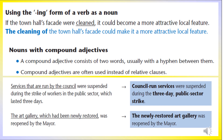Using the -ing form of a verb as a noun. Look at the first sentence: 'If the town hall's façade were clean, it could become a more attractive local feature.' The verb here is 'clean'. Instead of using that verb, we can use the -ing form of that verb to write this sentence differently.